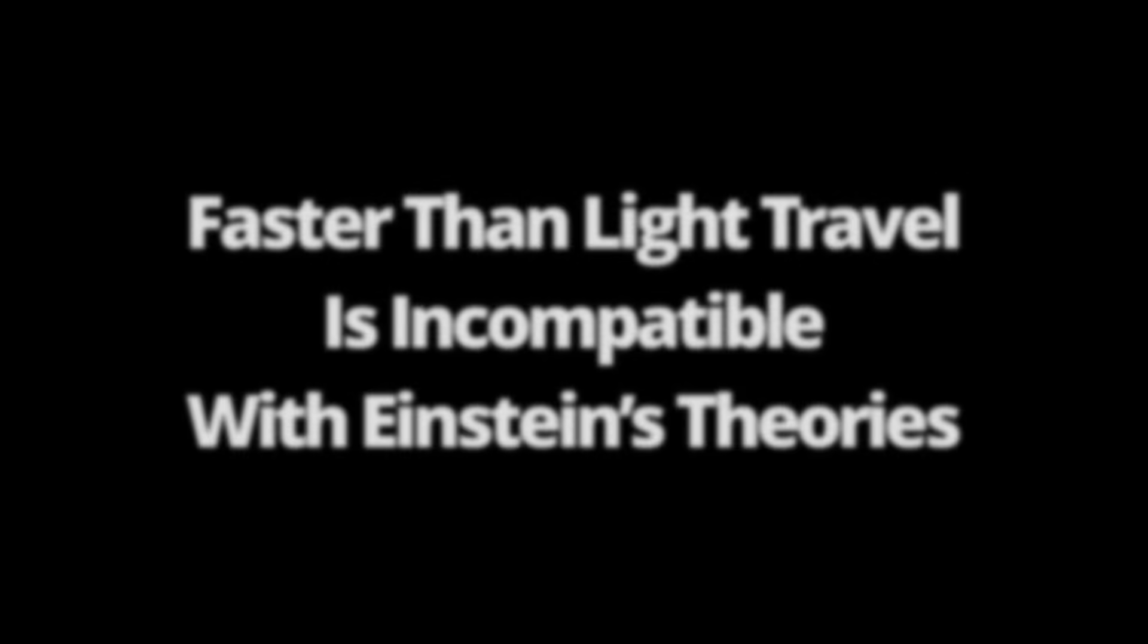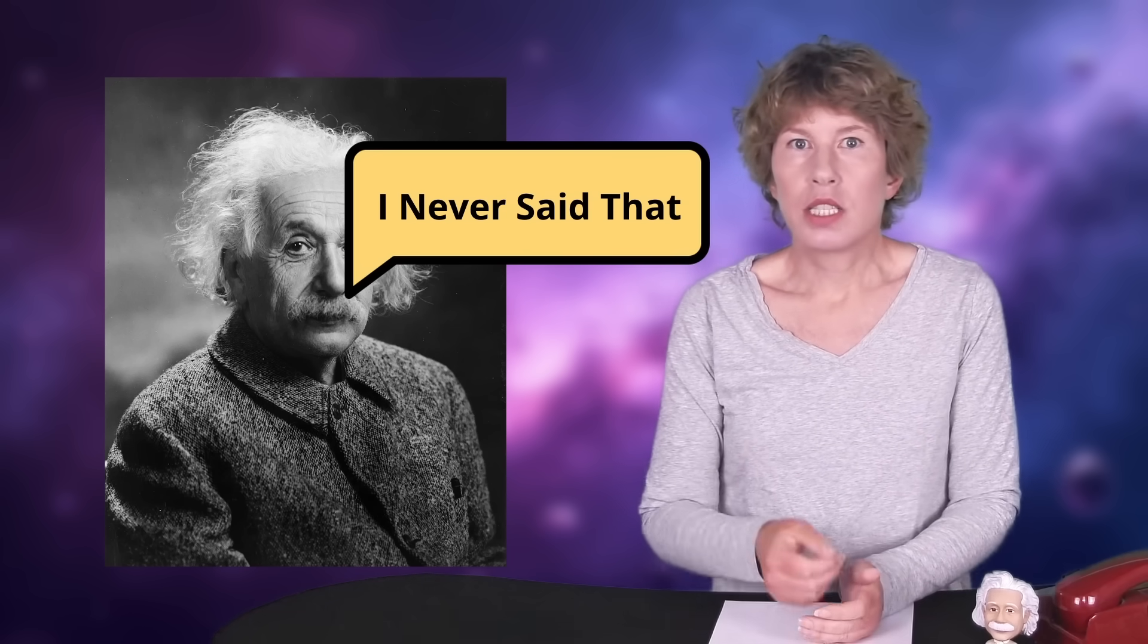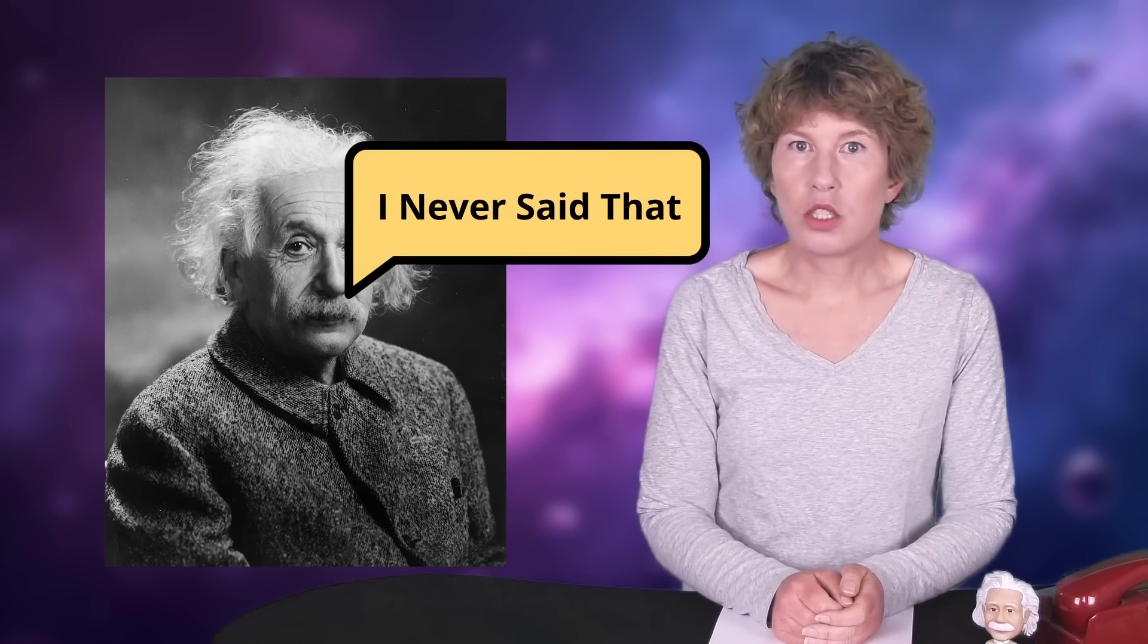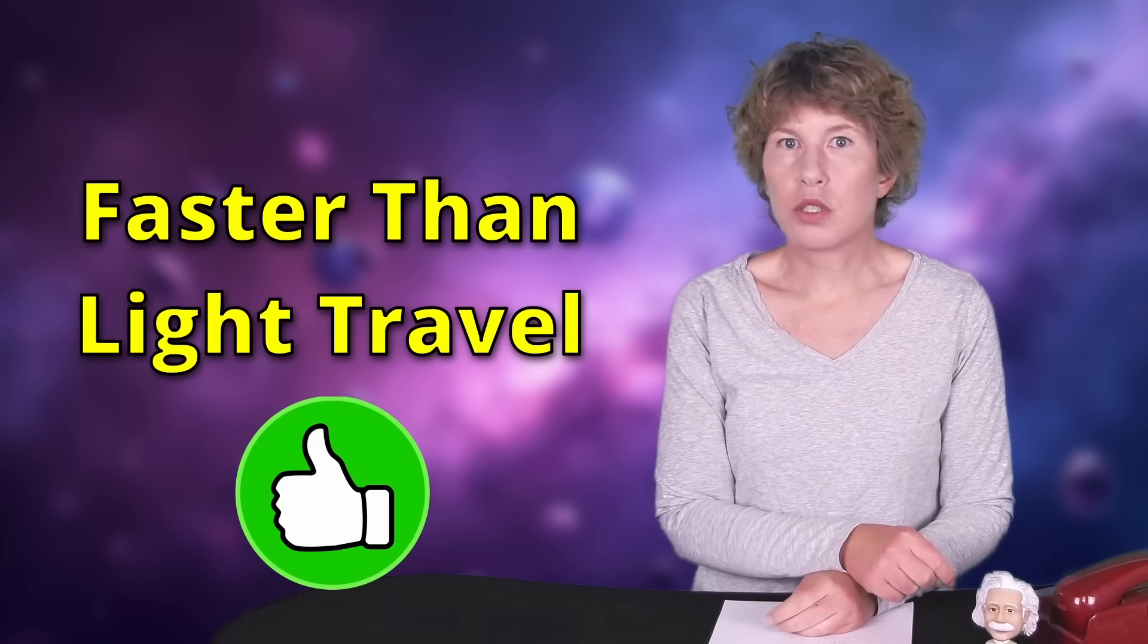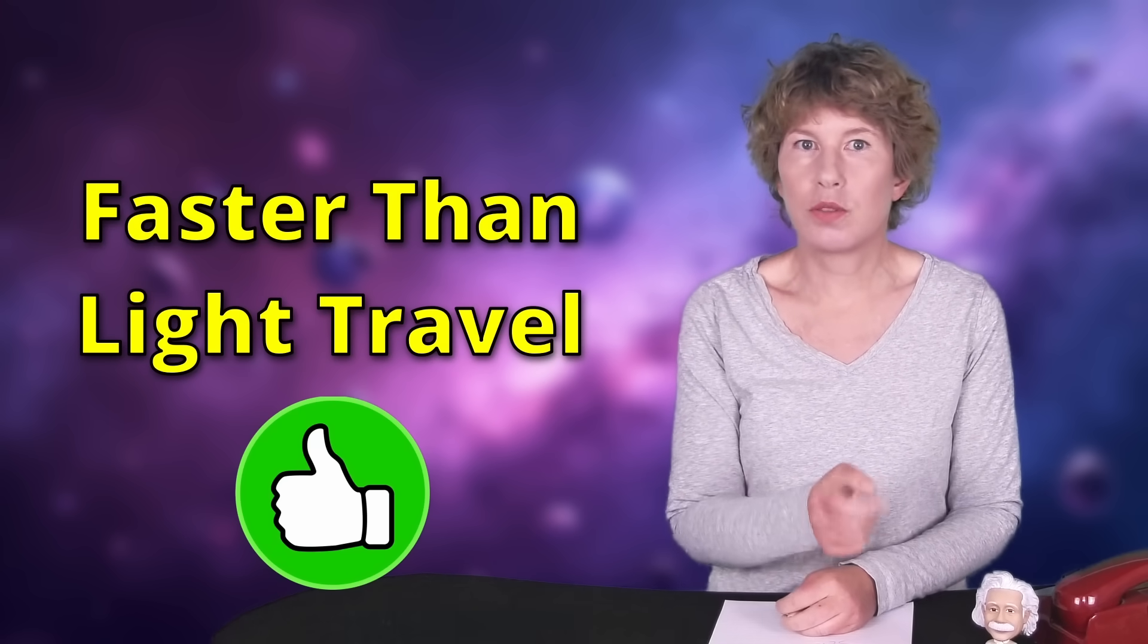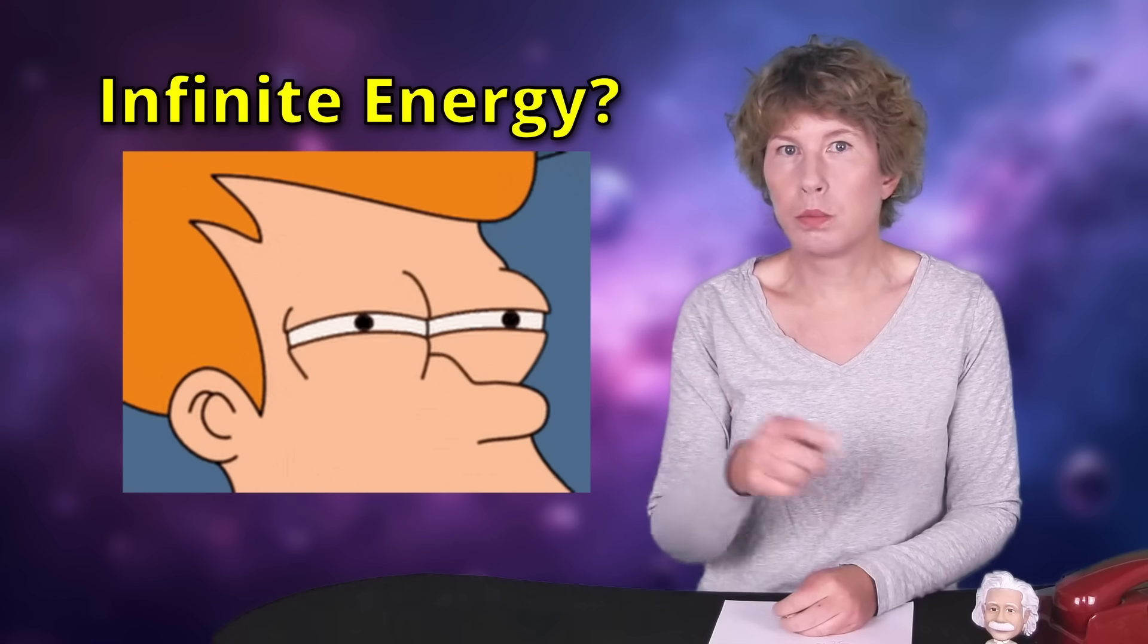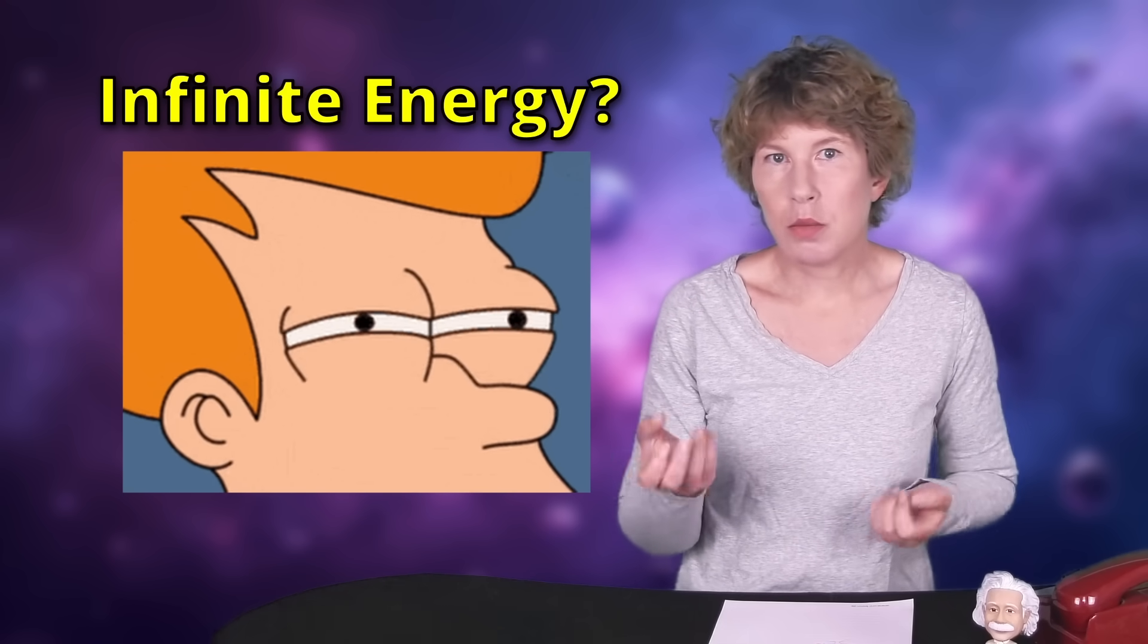And finally, number one. Faster than light travel is incompatible with Einstein's theories. That isn't true. You can totally have faster than light travel in Einstein's theories. What is true is that Einstein's theory also tells you that it takes an infinite amount of energy to accelerate from below the speed of light to above the speed of light. Doesn't that kind of mean the same thing? Isn't Sabine just nitpicking here?